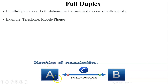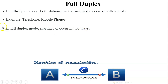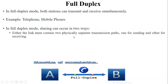Looking at the figure for full duplex mode: user A and user B — A can send data to user B, and user B will receive the data and send data back to user A at the same time. So here A and B are both senders and both receivers simultaneously.